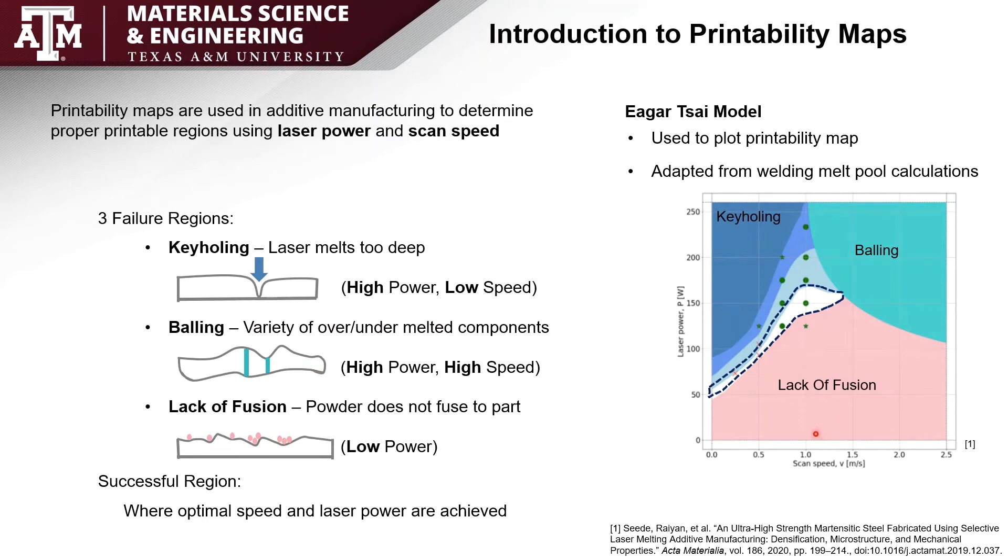Lack of fusion occurs when the power is too low. Speed does not have too much of an effect on this part. What you'll have is small clumps of powder that has not been completely melted that are just laying on top of each other. This dotted region here is what we call the successful region because this is where optimal speed and laser power are achieved. If you wanted to print something, this is where you would want to print because this is where you would have the highest chance of success.